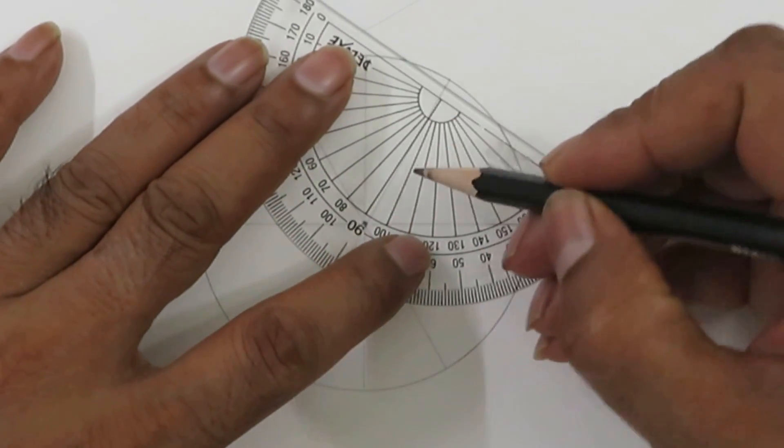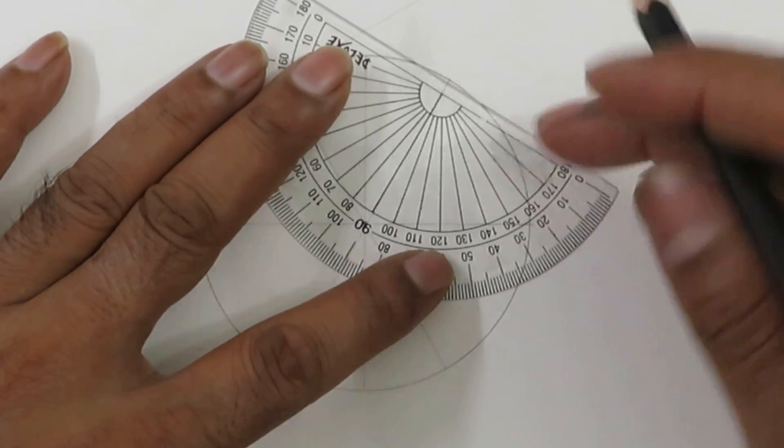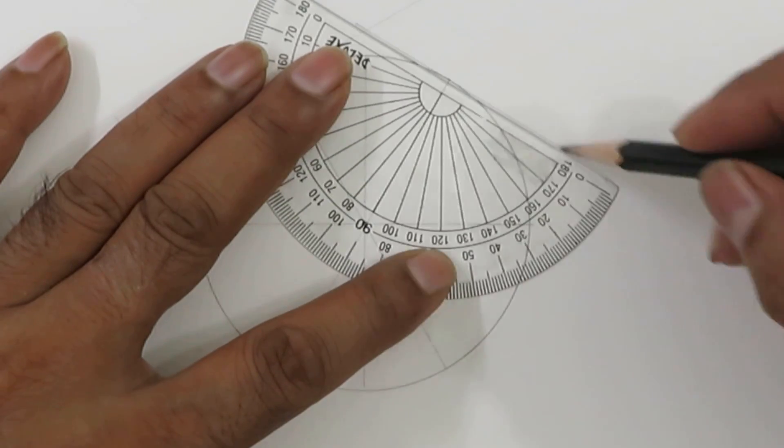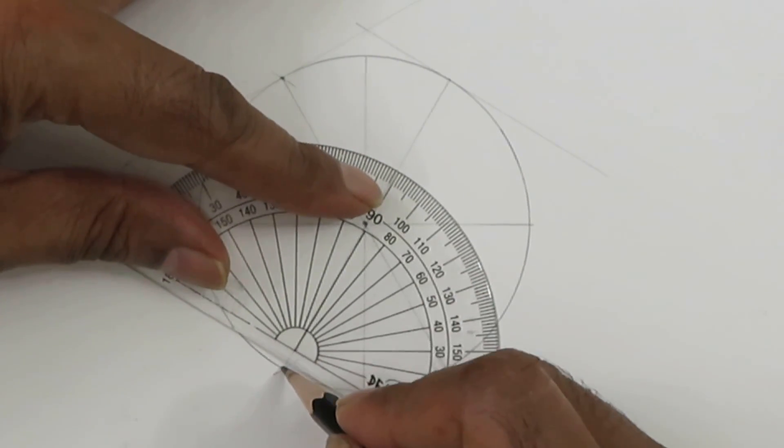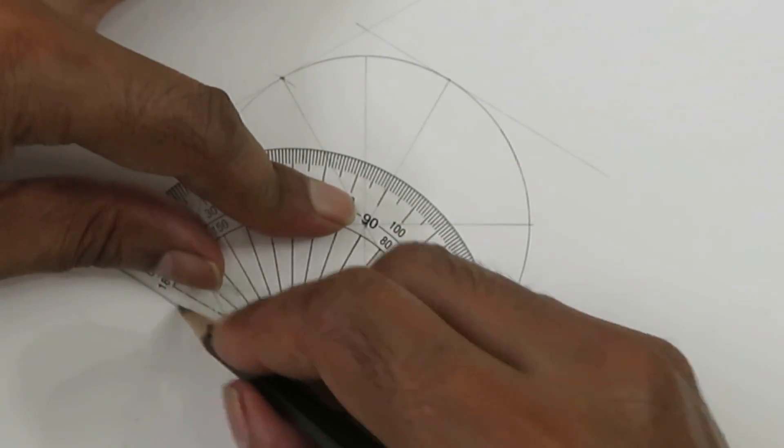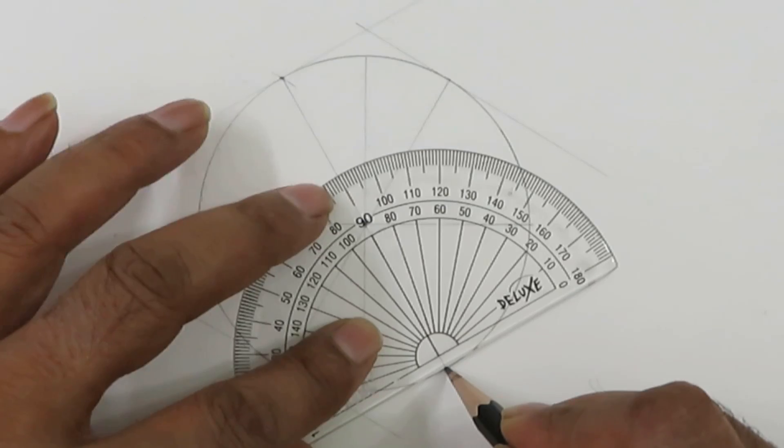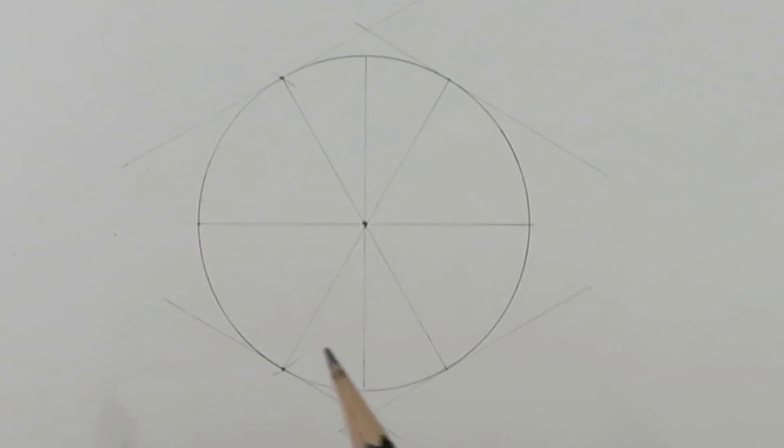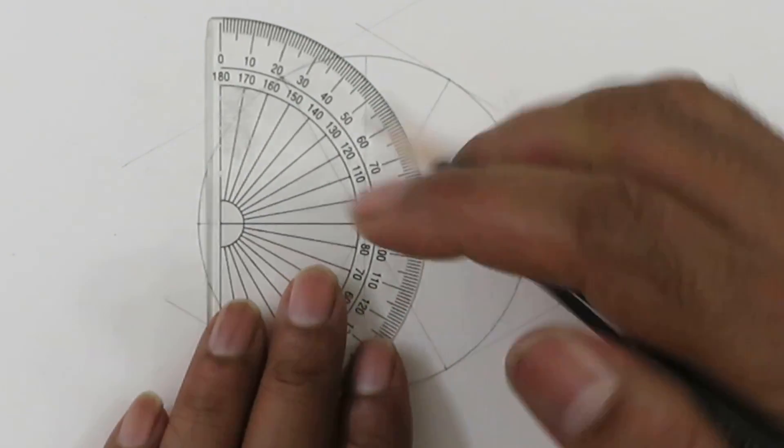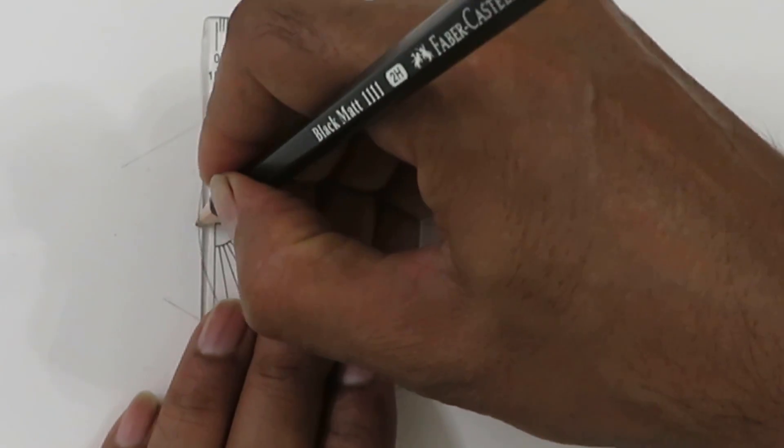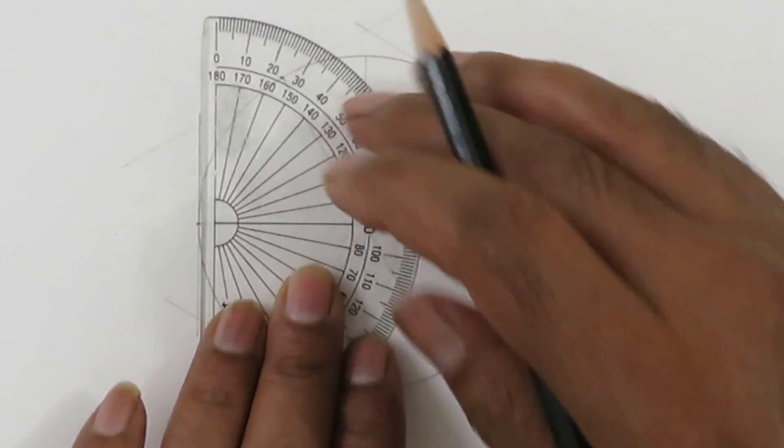Similarly here, again you align this line with the diameter. And you also draw tangent at these two points on the horizontal diameter. Now make sure that this line cuts the other lines that we have just drawn.